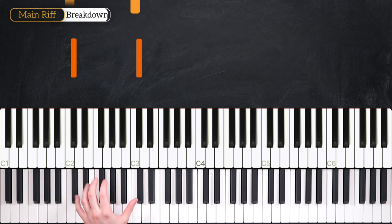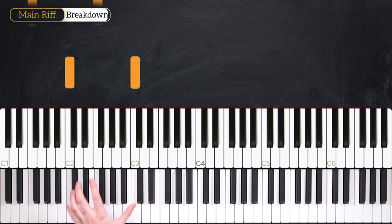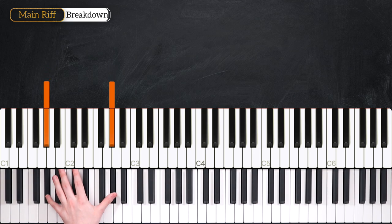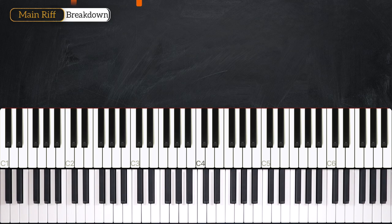It really is that simple. We're just going to be playing Db, C, F, and Ab. And that's it. That's all there is to it. Let's hear it really slowly hands together, just so I can show you how it all pieces together.